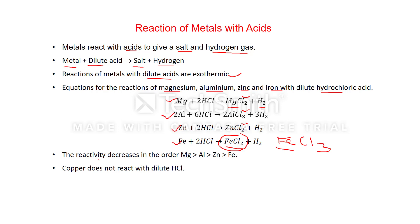On the basis of these reactions we can arrange these metals in decreasing order of reactivity: magnesium is the most active among the four, then aluminium, then zinc, and iron is the least active among these four. Copper does not react with dilute HCl at all.